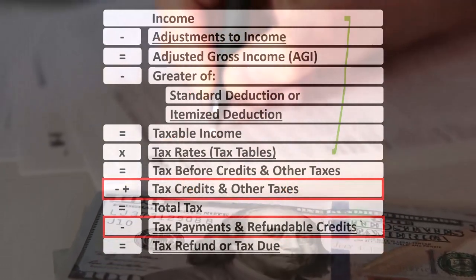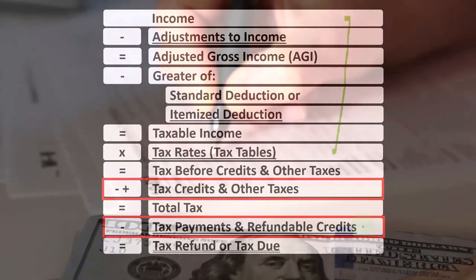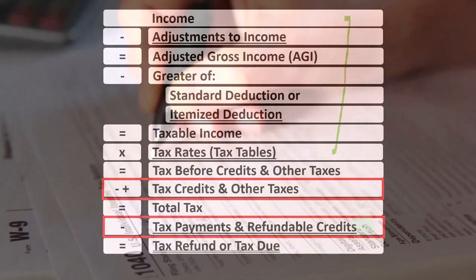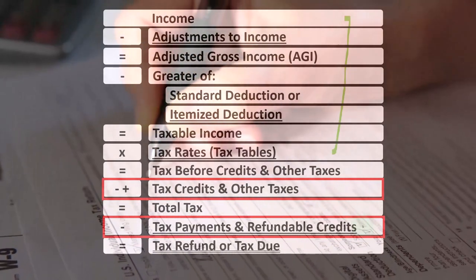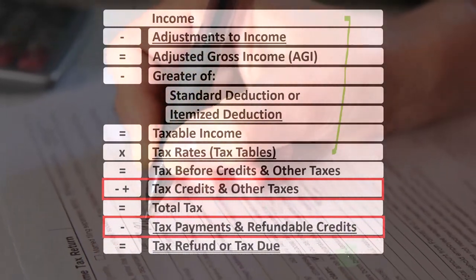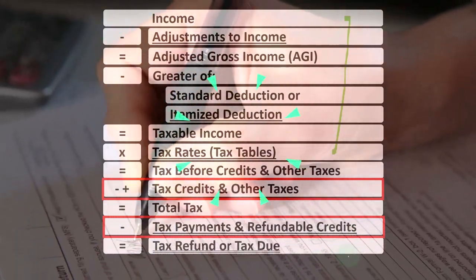We then have the payments in the form of withholdings or estimated tax payments to get to the refund or tax due — the bottom line.